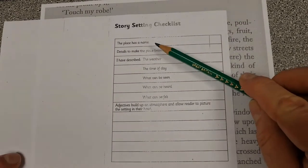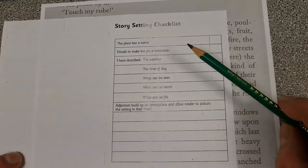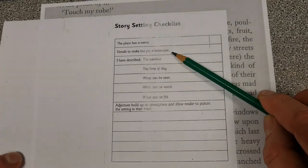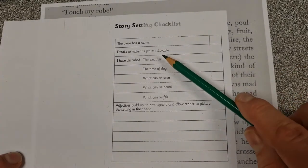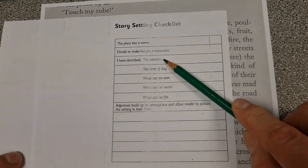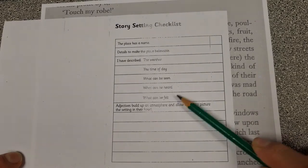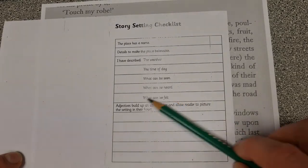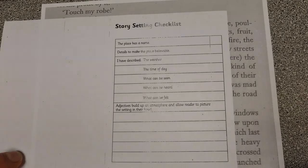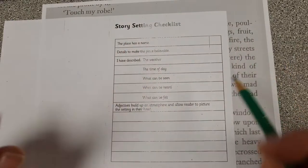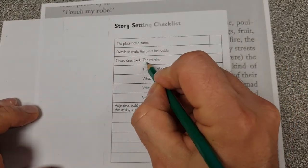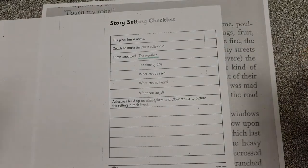I'm checking to see if the place has a name, any details to make the place believable, and I'm looking for examples of the weather, the time of day, what can be seen, what can be heard, and what can be felt. I also have a space to note any really good adjectives. I've got some colored pencils and I'm going to look for examples of the weather in green — I'll start with the senses first.